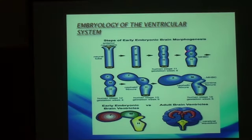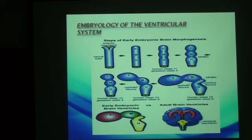Later on, the neural tube takes certain constrictions and bending, giving the forebrain, midbrain, and hindbrain vesicles that are fluid-containing with CSF, giving the forebrain, midbrain, and hindbrain ventricles. The forebrain ventricles later on will give the lateral ventricles and the third. The midbrain ventricles will give the aqueduct of Sylvius. The hindbrain ventricles will give the fourth ventricle.